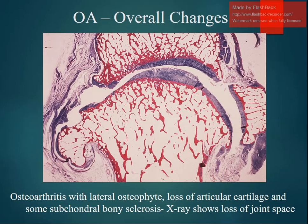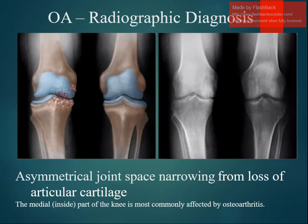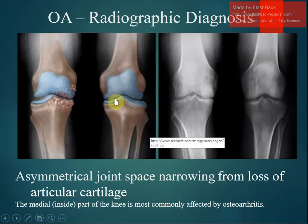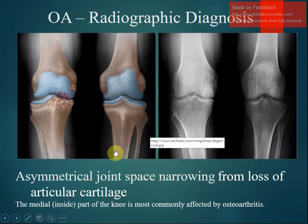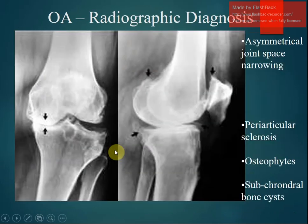On X-ray there is a distinct loss of joint space. You can also see changes in the articular cartilage, bone spurs, diminished joint space, periarticular sclerosis, and subchondral bone cysts.